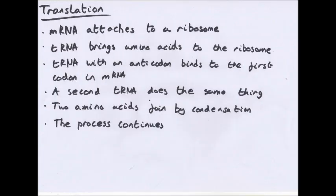Translation. So, the mRNA attaches itself to a ribosome, and tRNA molecules carry amino acids to the ribosome. A tRNA molecule with an anticodon that's complementary to the first codon on the mRNA attaches itself to the mRNA by complementary base pairing. A second tRNA molecule attaches itself to the next codon on the mRNA in the same way. The two amino acids attached to the tRNA molecules are joined by a peptide bond in a condensation reaction. The first tRNA molecule moves away, leaving its amino acid behind. And this just continues until the polypeptide chain has been made.